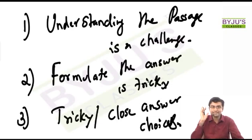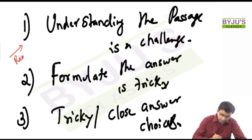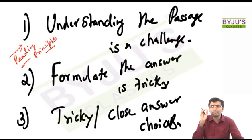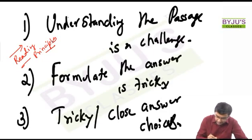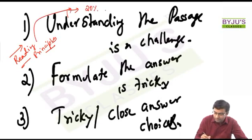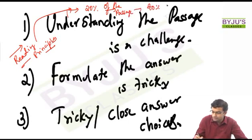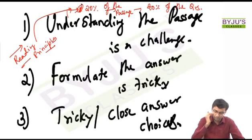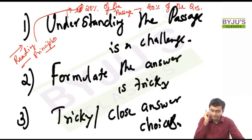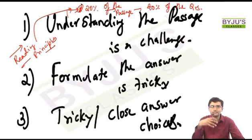What we discussed was: understanding the passage is a challenge, and that is why we have the reading principles class. The reading principles class basically helps you to understand the passage and figure out what is really important while answering questions. The objective of the reading principles class was to pick up 20% of the passage which will help us to answer 80% of the questions — identifying that 20% of the passage which will help us answer 80% of the questions. Now that we know that, we need to formulate the answer, and then figure out how to pick the right answer choice when stuck between two options.